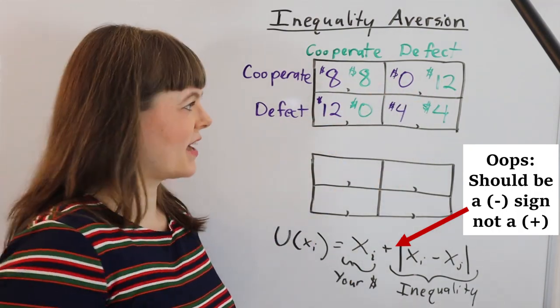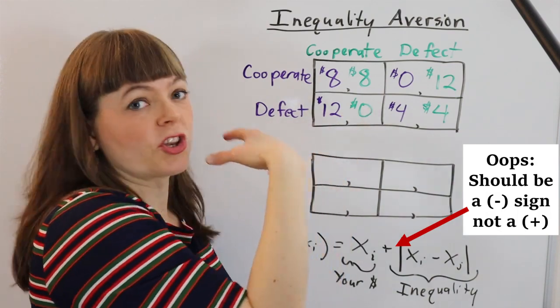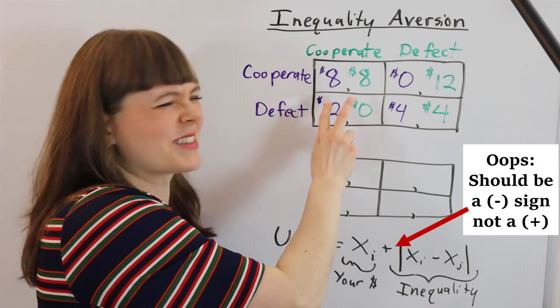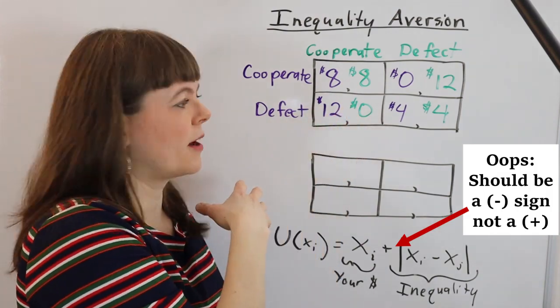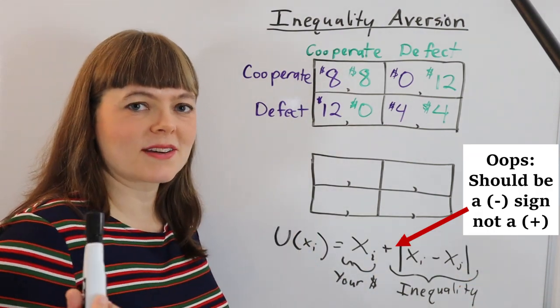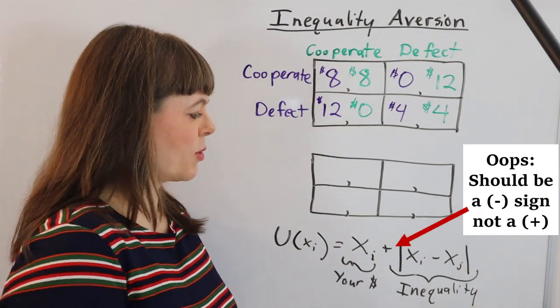You could adjust that such that you really don't like it when you are the one with the zero and they have the 12, and you just don't like it a little bit if the other person has less than you. You can make this function more complicated if you want, but I want you to start out with a simple one.